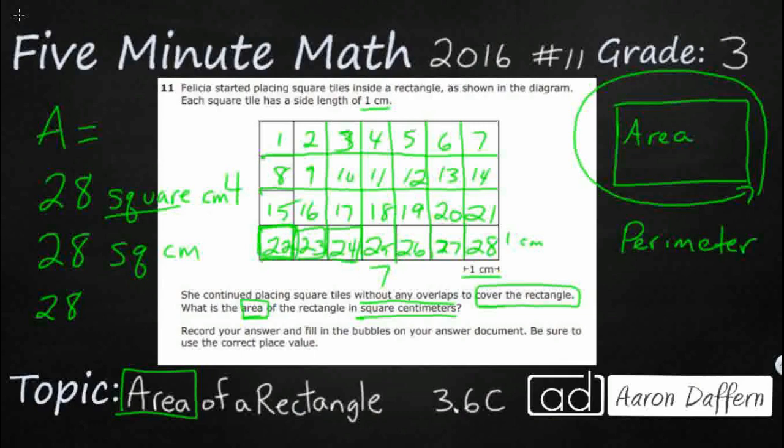This is something you'll see in upper grades: cm with a little two called an exponent. That little two that floats above actually means squared. So all three of these read 28 square centimeters, because that is the area.